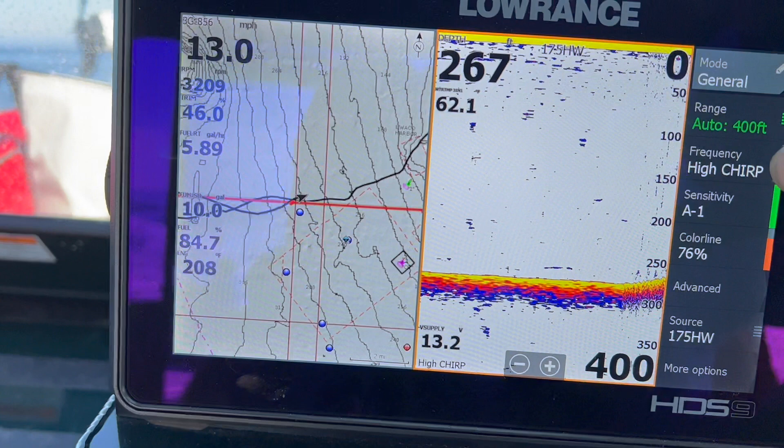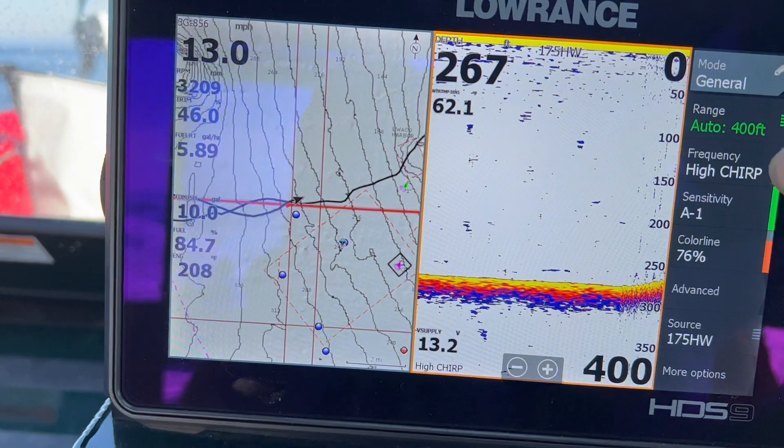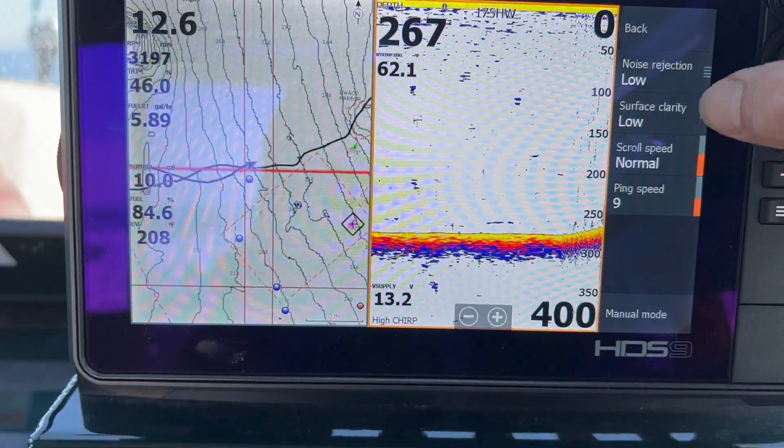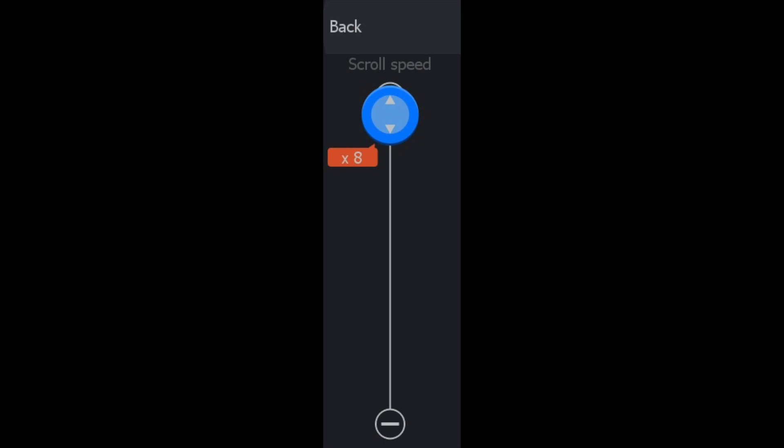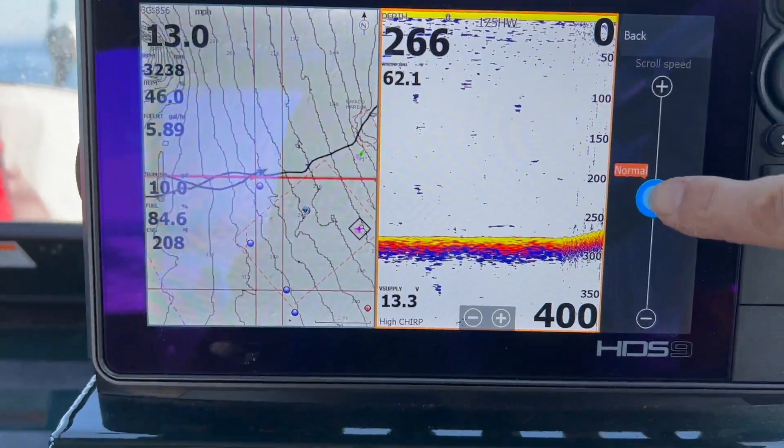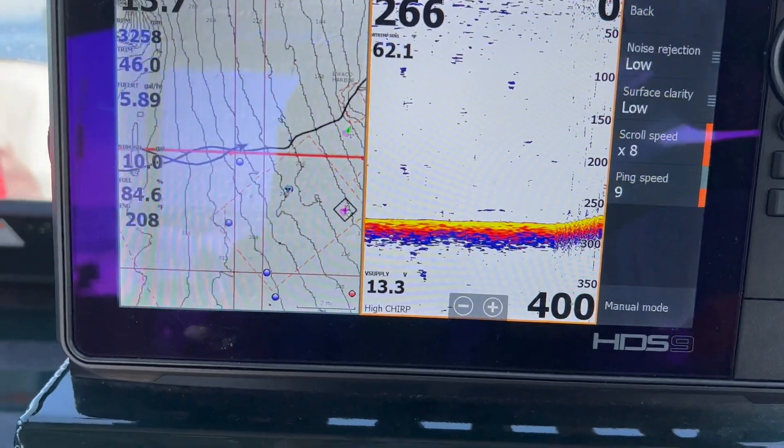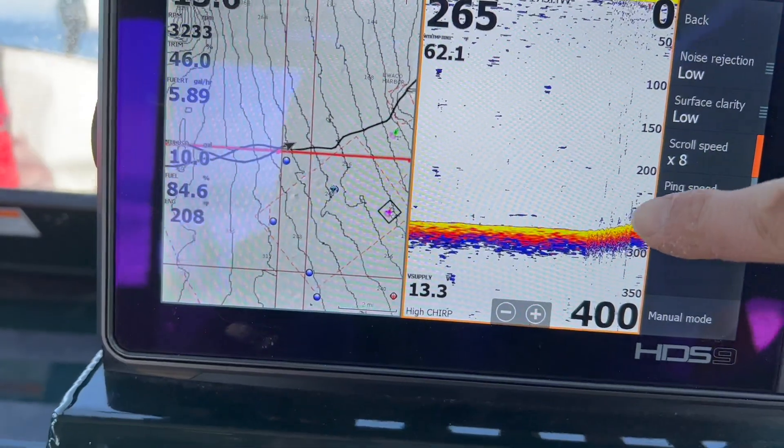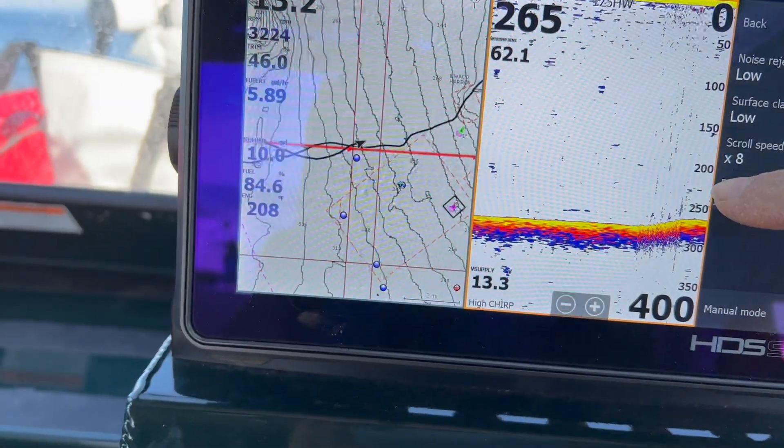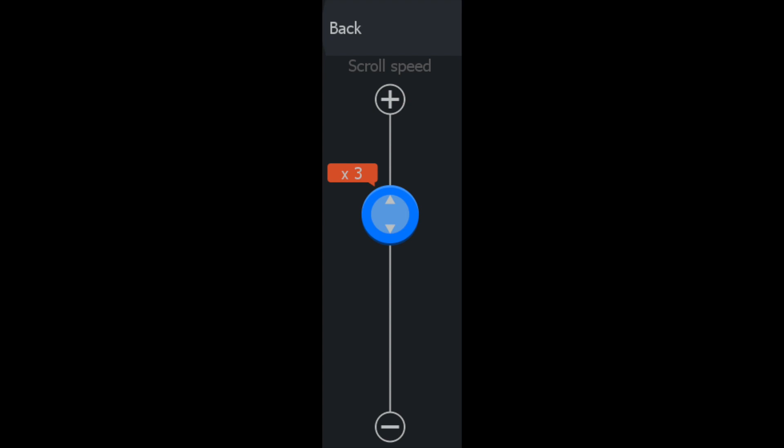Now on Lowrance this is found under your sonar menu advanced. And here you can select the scroll speed and increase this. Now if you're moving fast, let's say you're on a plane, then you'll want to crank this up all the way. If you're trolling fast, let's say you're salmon fishing using 360 flashers or skateboard flashers and you're trolling at three miles an hour, then you'll want to increase this to maybe around three times normal.